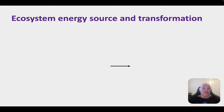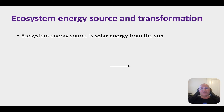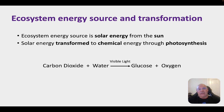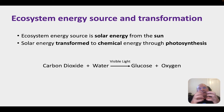The primary energy source for nearly all ecosystems is light from the sun — I say nearly all because there are some organisms that use chemicals for energy, but predominantly it's light energy. Through photosynthesis, that energy is transformed from solar or light energy to chemical energy. That transformation occurs in producers, where inorganic materials — carbon dioxide and water — in the presence of visible light produce organic molecules, glucose. It's in that glucose that the energy is stored. That is, of course, photosynthesis.